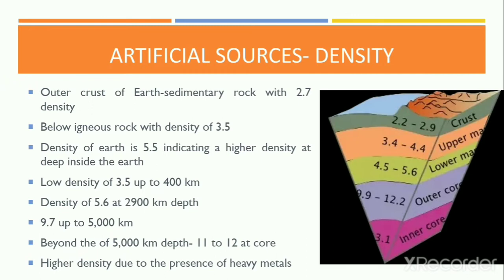The density remains low at 3.5 up to a depth of 400 kilometers. It rises to nearly 5.6 at 2,900 kilometers deep, and there is a sudden increase to 9.7 up to a depth of 5,000 kilometers. Beyond 5,000 kilometers, the density further increases and reaches 11 to 12 grams per cubic centimeter at the core. It is assumed that this high density at the core is due to the presence of heavy metals like iron and nickel.